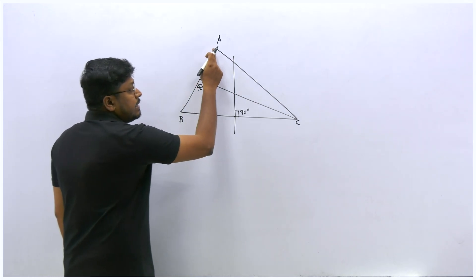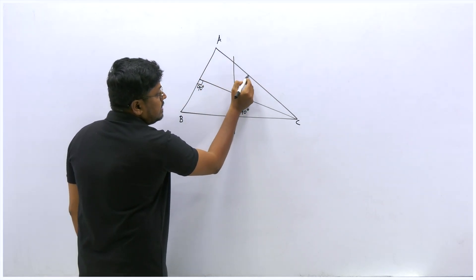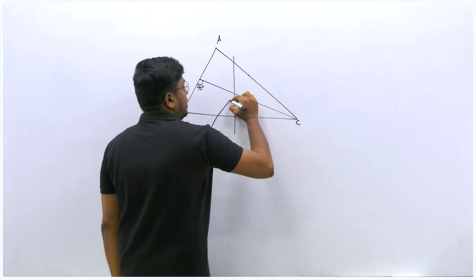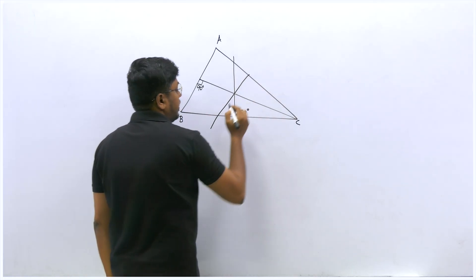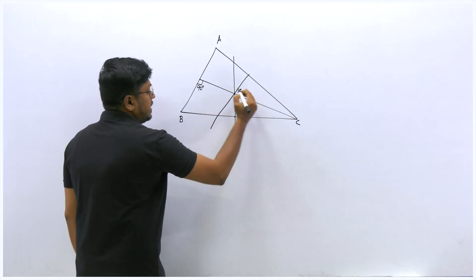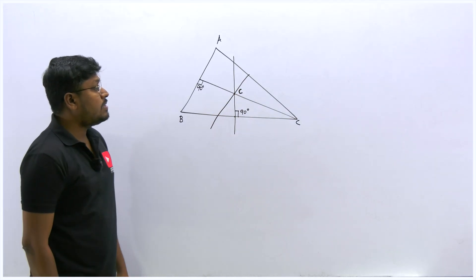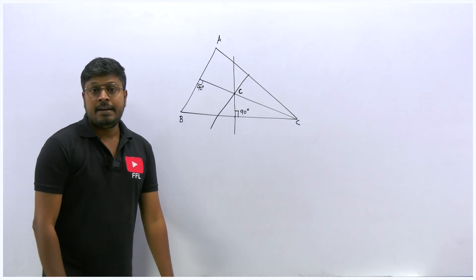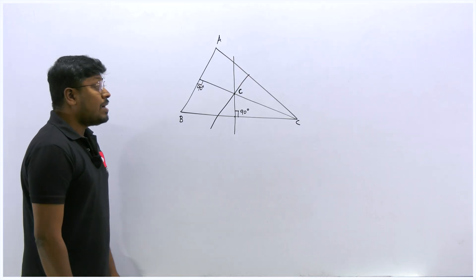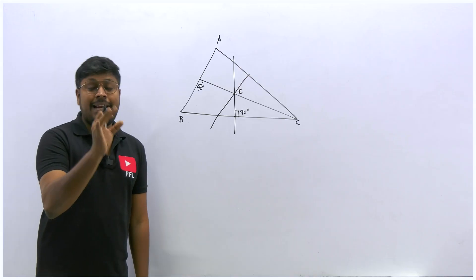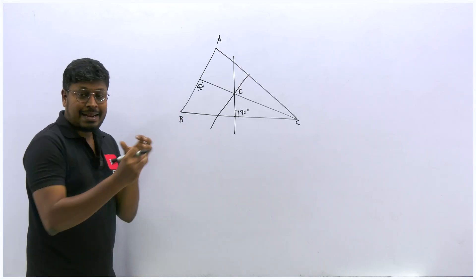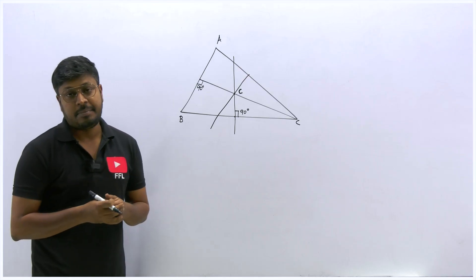For the third side AC, find its midpoint and draw a perpendicular line as well. The point where all three perpendicular bisectors meet is called the circumcenter of the triangle.